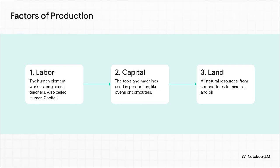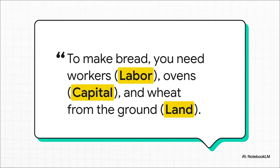There are three main ones you need to know. First up, you've got labor — the human element: the workers, the engineers, the teachers. Sometimes you'll hear it called human capital. Second is capital. This doesn't mean money — in economics, capital means the tools, the machines, the factories, all the stuff you use to make other stuff. And finally, you have land, which is shorthand for all natural resources, from soil and trees to oil in the ground. Think about baking a loaf of bread: you need the baker — that's labor; the oven — that's capital; and the flour from wheat grown in the ground — that's land. Pretty much every single thing is made from some combination of these three ingredients.